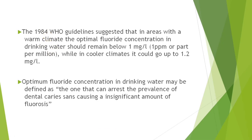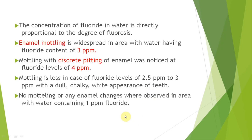In 1984, WHO guidelines suggested that 1 ppm should be the optimal fluoride concentration to get maximum benefit and prevent dental caries. In warmer climates the ppm can be low, around 0.7 to 0.8, and in cooler climates it can go up to 1.2, so the range varies between 0.7 to 1.2 ppm because it is affected by temperature.